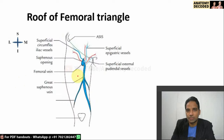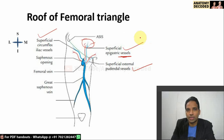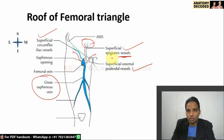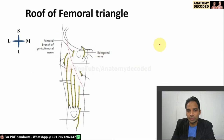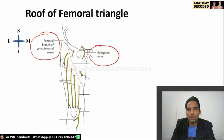In the superficial fascia, the contents we should know are the superficial epigastric vessels, superficial external pudendal vessels, and superficial circumflex iliac vessels — meaning both artery and vein. These arteries are the three superficial branches of the femoral artery, and the veins are tributaries of the great saphenous vein just before it enters the femoral vein. There are also cutaneous nerves: branches of the ilioinguinal nerve and the femoral branch of the genitofemoral nerve.